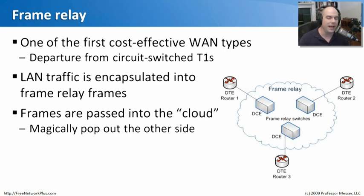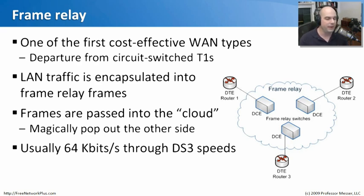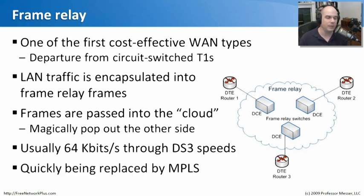Once traffic went into the cloud, we really didn't care what happened to it. The provider's clouds are extremely complex — many switches, a lot of redundancy, a lot of fault tolerance. We just gave it off to the provider and it magically appeared on the other side. The speeds on Frame Relay were also very nice because we weren't locked into a specific T1 speed. We could go very slow or crank up the speed to very high speeds if we were plugged into a Frame Relay network over DS3.